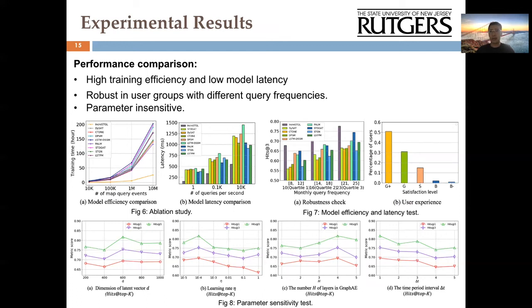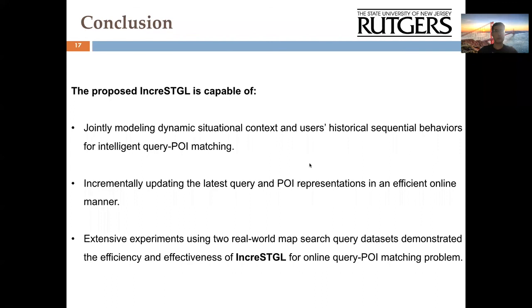Furthermore, Figure 8 demonstrates the parameter sensitivity of our model. In summary, our proposed IncrSTGL is capable of jointly modeling dynamic situational context and the user's historical sequential behaviors for intelligent online query-POI matching. The extensive experiments further demonstrate the efficiency and effectiveness of our model for the online query-POI matching problem.